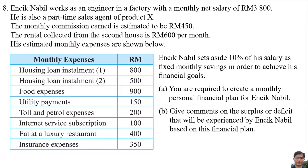Injik Nabil works as an engineer in a factory with a monthly net salary of RM3,800. He is also a part-time sales agent of Product X, with an estimated monthly commission of RM450. The rental collected from his second house is RM600 per month, and his estimated monthly expenses are shown below.